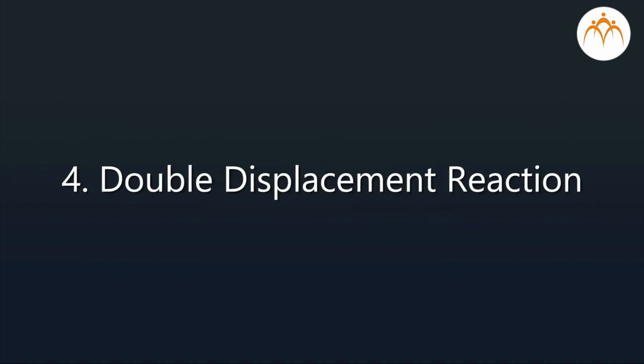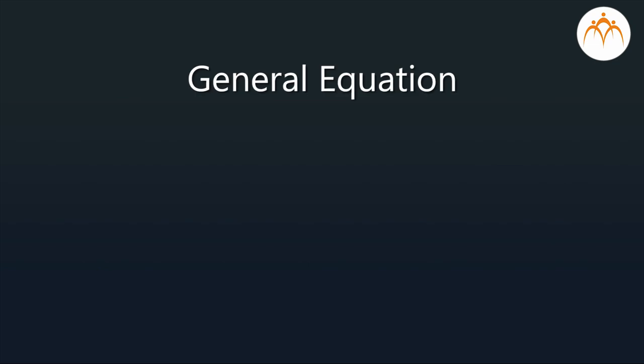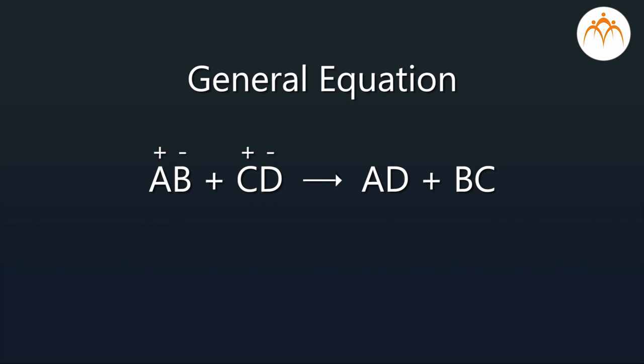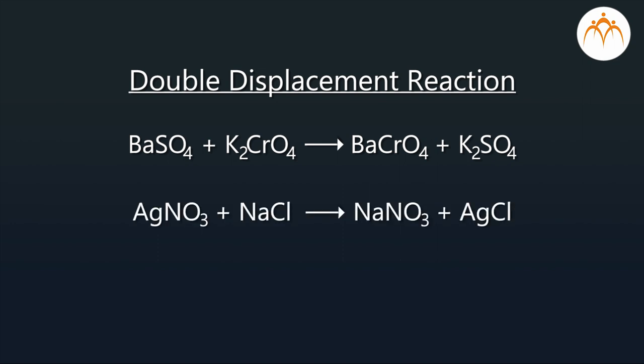Double displacement reaction. The reaction in which ions in the reactants are exchanged to form precipitate is called double displacement reaction. General equation, AB plus CD gives AD plus BC. A and C are cations, B and D are anions. Example, BaSO4 plus K2CrO4 gives BaCrO4 plus K2SO4. AgNO3 plus NaCl gives AgCl plus NaNO3.